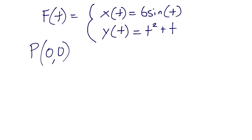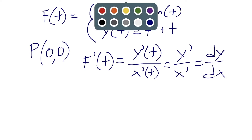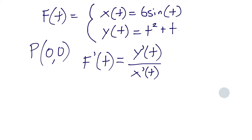Our formula for finding this slope is to take the first derivative f prime of t of the curve, and set it equal to y prime of t divided by x prime of t. This is similar to the notation y prime over x prime equals dy over dx, which you recognize as the first derivative — also known as the slope of the tangent line. That's where the idea for this parametric curve slope formula comes from.